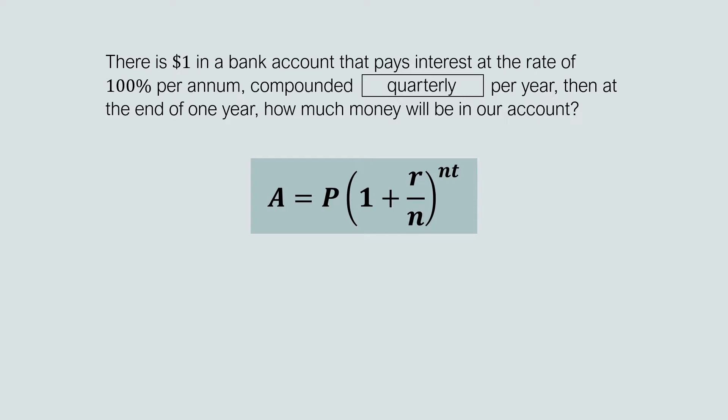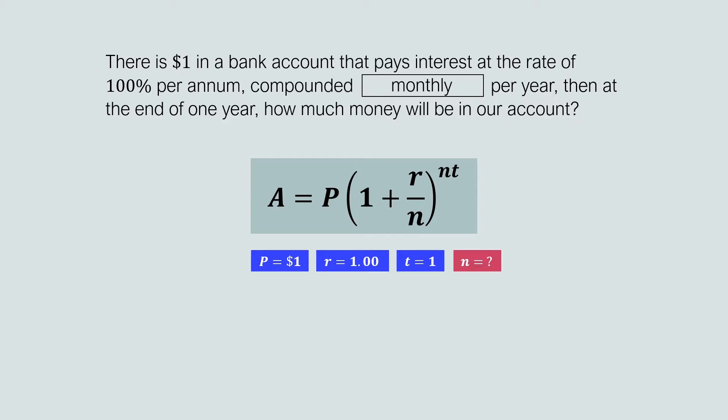But what if interest was compounded not quarterly but instead monthly? Let's take a closer look at the scenario and distinguish between constants and variables. The constants are the principal amount ($1), the annual interest rate (100% per annum), and the time period (1 year). The only variable is N, which represents the number of times interest is compounded per year. We can simplify the compound interest formula and just plug in different values of N.